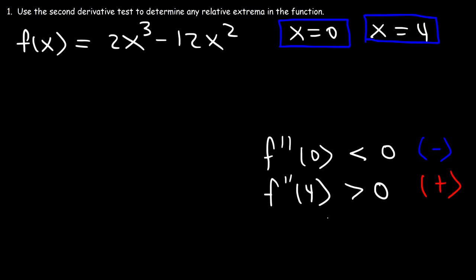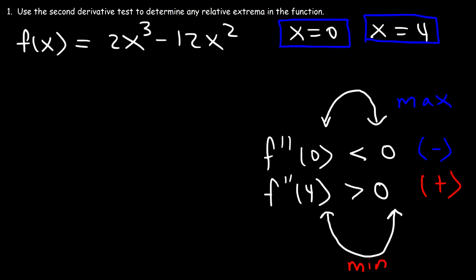When the second derivative is positive, we have a graph that is concave up, and when it's negative, it's concave down. A concave up graph is associated with a minimum, and a concave down graph is associated with a maximum. So at x = 0, we have a maximum, and at x = 4, we have a minimum. That's how you use the second derivative test to determine the relative extremum.